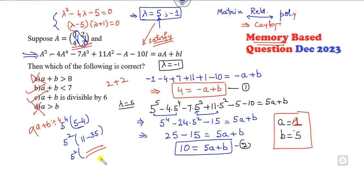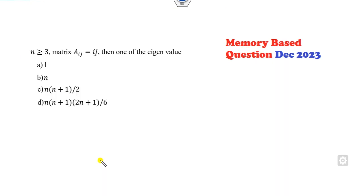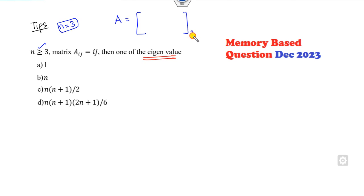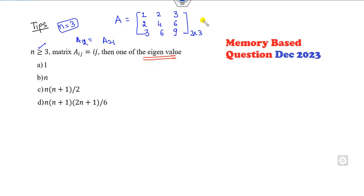Always apply the concept of eigenvalue when you see a matrix. Now look at the second question. The question involves a form of n, and the smallest value of n is 3. So construct a 3×3 matrix where aᵢⱼ = i·j. So a₁₁ = 1, a₁₂ = 2, a₁₃ = 3, a₂₁ = 2, a₂₂ = 4, a₂₃ = 6, a₃₁ = 3, a₃₂ = 6, a₃₃ = 9.